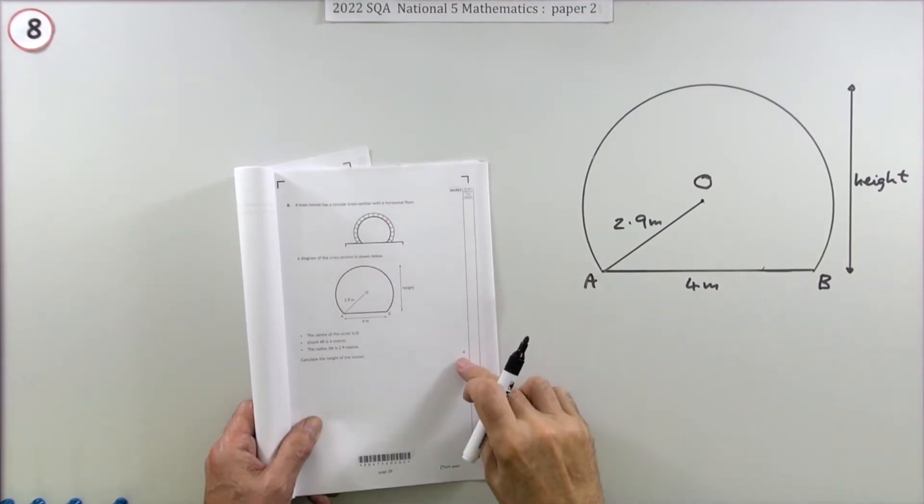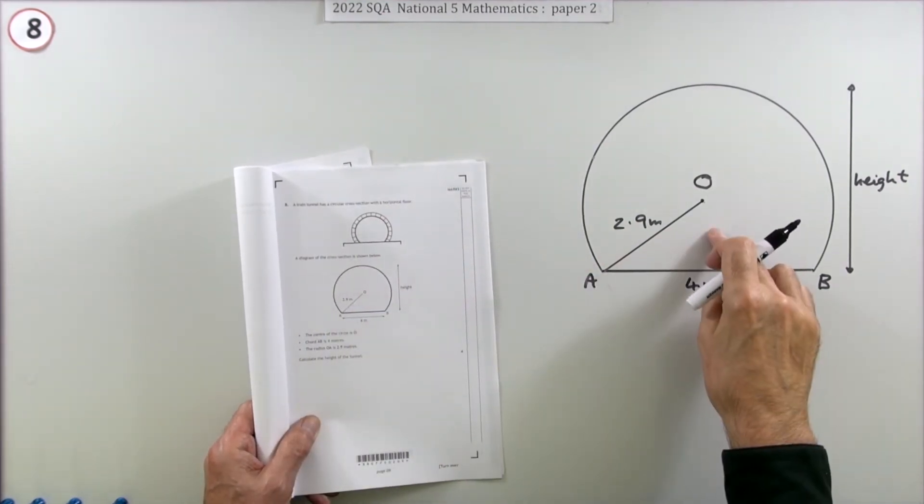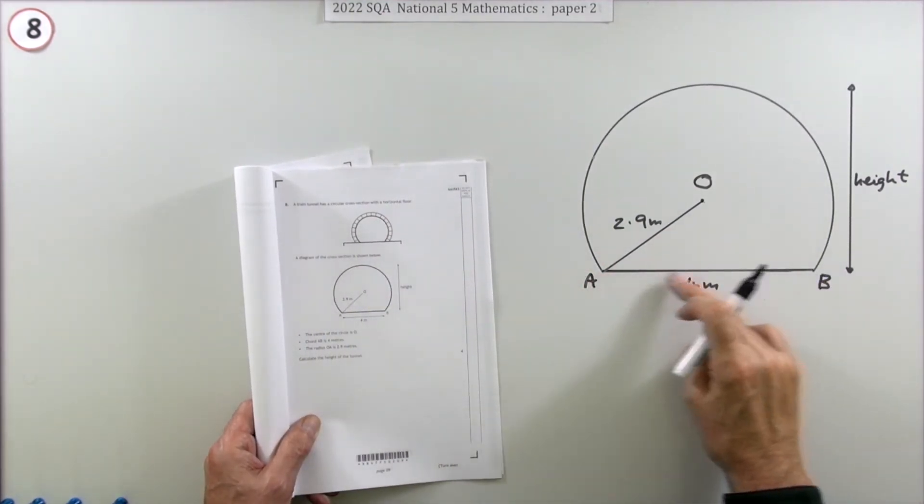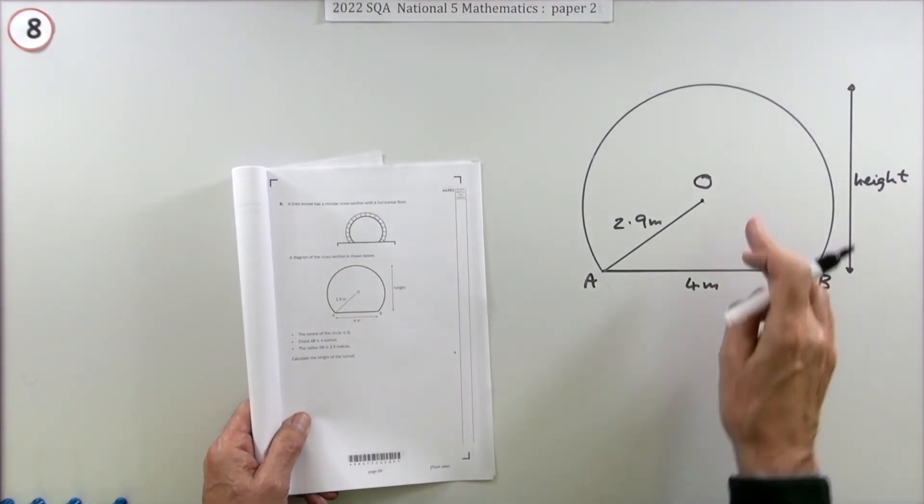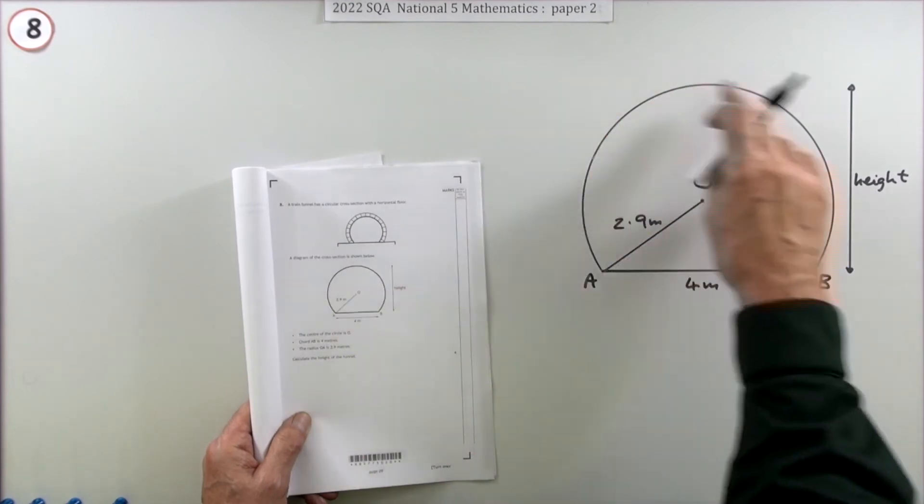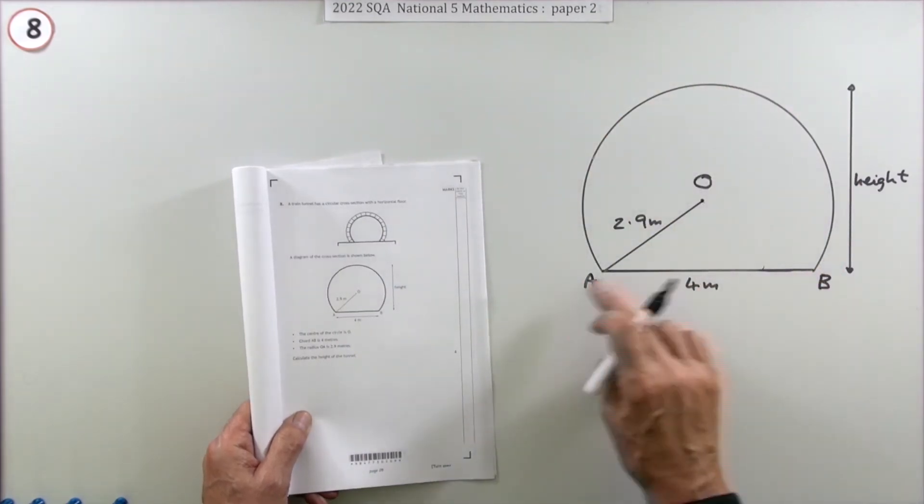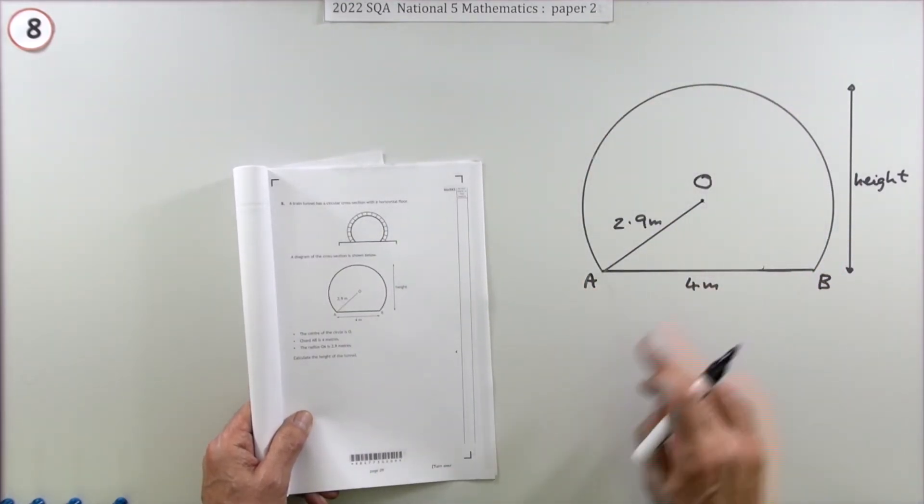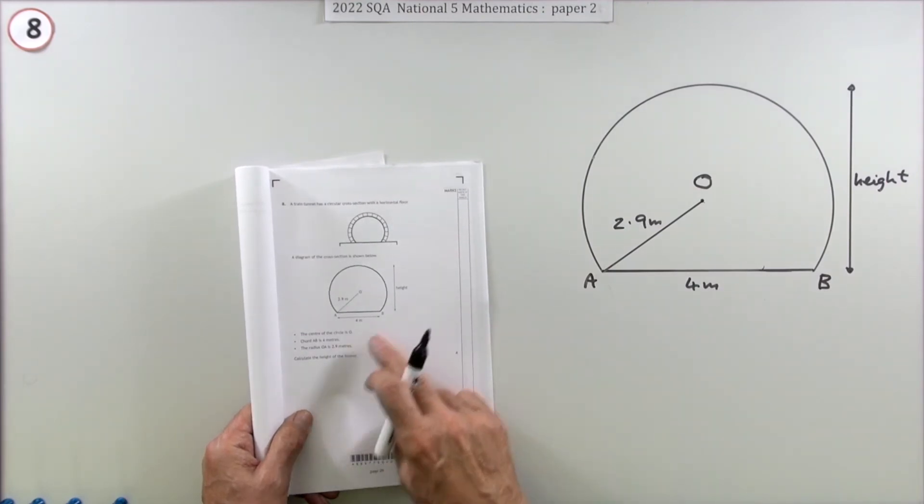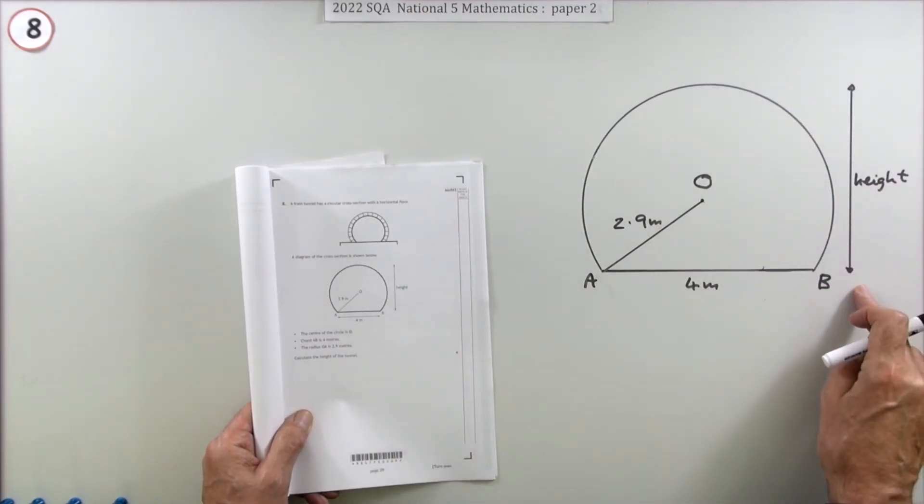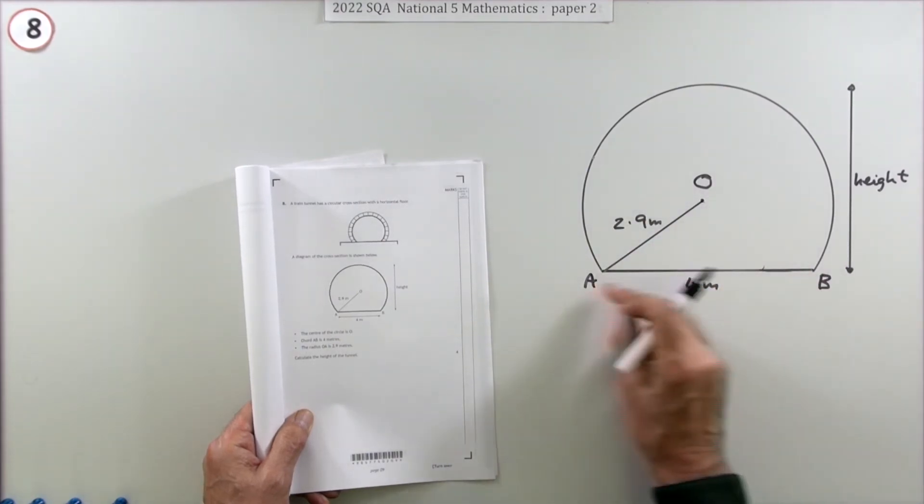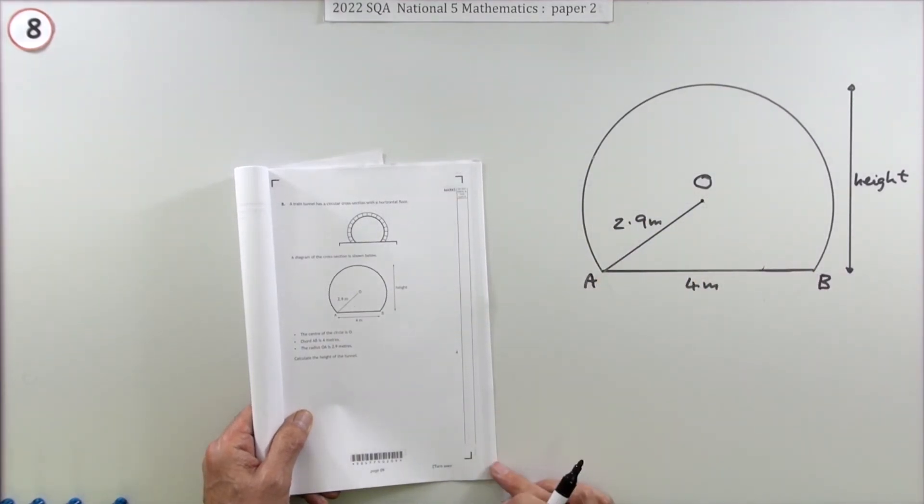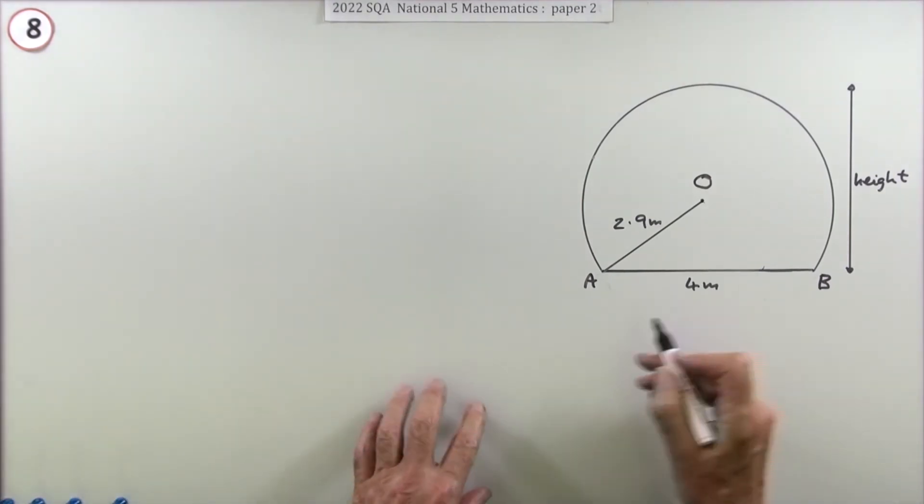Number eight for four marks: a circle calculation. As soon as it involves a chord, you know you're looking for a right angle triangle. A train tunnel's got this circular cross-section with a horizontal floor. Calculate the overall height given that the radius of that circle is 2.9m and the chord at the base is 4 meters.